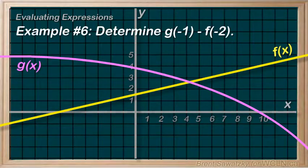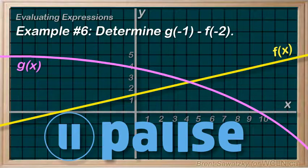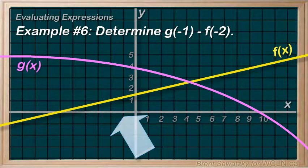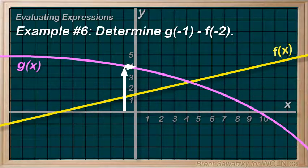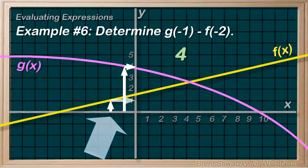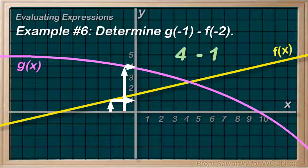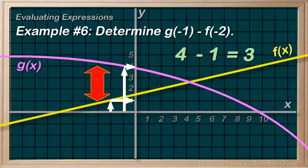Example 6: Determine g(-1) minus f(-2). Pause the video and give this one a try. This one involves both graphs. At x equals negative 1, the y value of g is 4, so we replace g(-1) with 4. At x equals negative 2, the y value of function f is 1, so we replace f(-2) with 1. We're simply asked to subtract: 4 minus 1 for a total of 3. We can notice this represents the vertical distance between these two points.